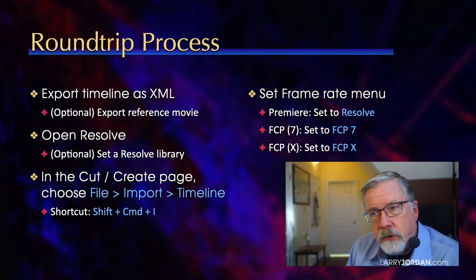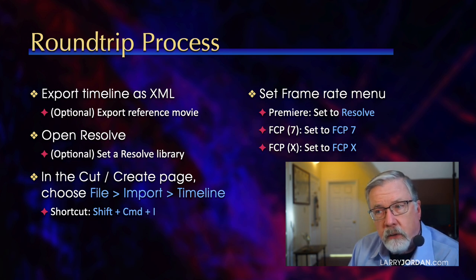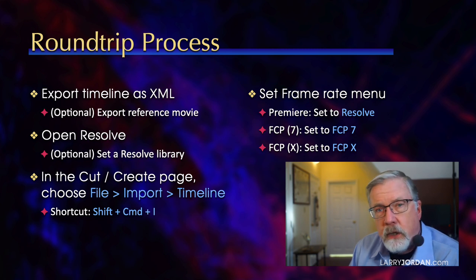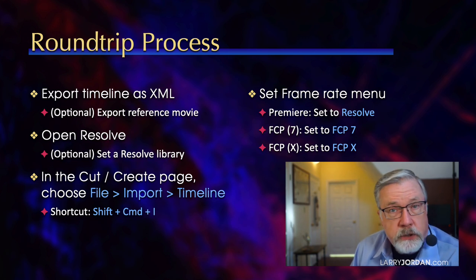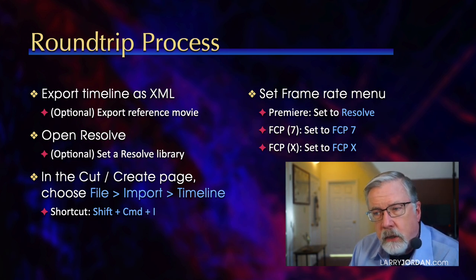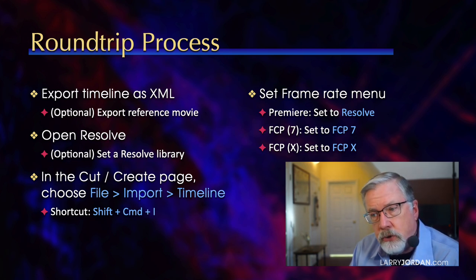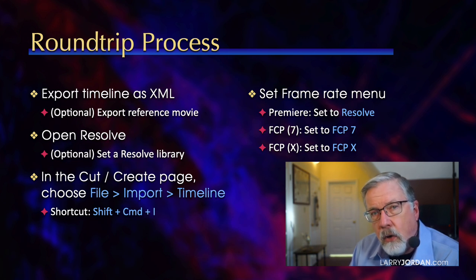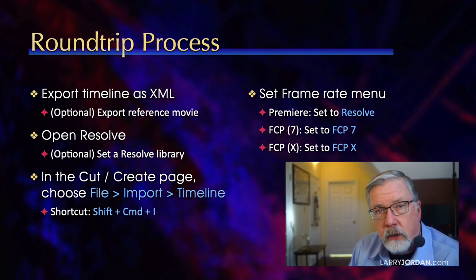Finish your project as much as you want. You export the timeline as XML, and then optionally export a reference movie. You open Resolve, and if it's the very first time you've opened Resolve, you need to set a Resolve library to an external hard disk, which it uses for reference movies. Then in the Cut or Create page, choose File > Import Timeline — the shortcut is Shift-Command-I. Because Avid, Resolve, Premiere, Final Cut 7, and Final Cut 10 all calculate frames differently, you need to tell Resolve how to calculate frame rates.